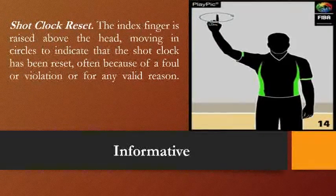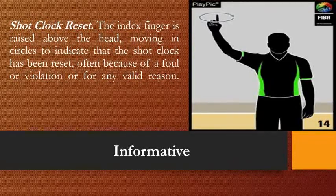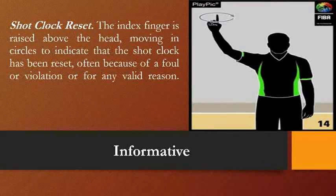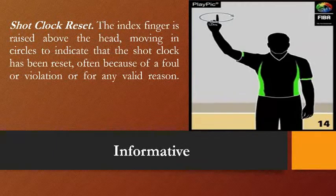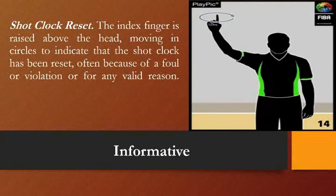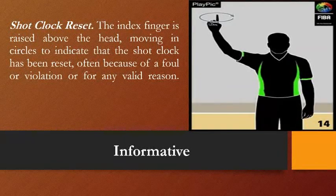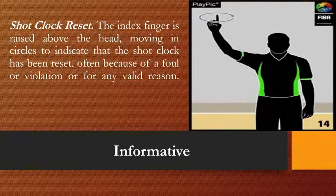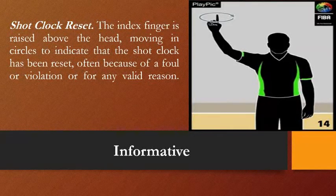Another informative signal is the shot clock reset. The index finger is raised above the head, moving in circles to indicate that the shot clock has been reset — often because of a foul, violation, or any valid reason. There is a 24-second shot clock given to the team that has possession of the ball. The referee signals shot clock reset if the ball hits the ring or after any violation or valid reason.